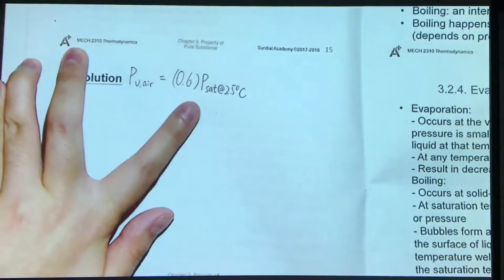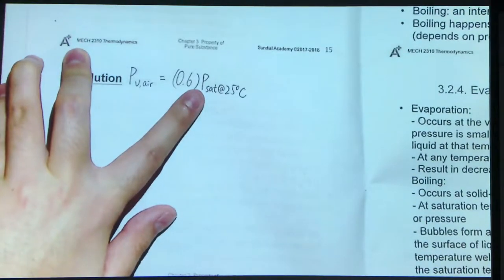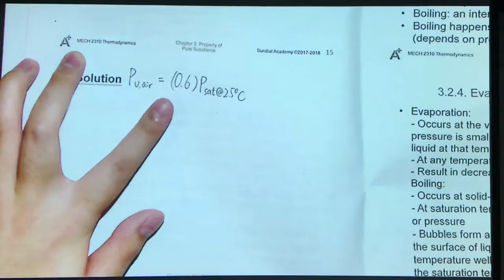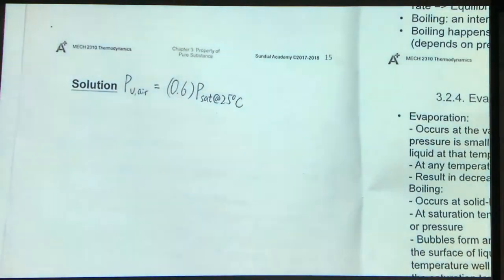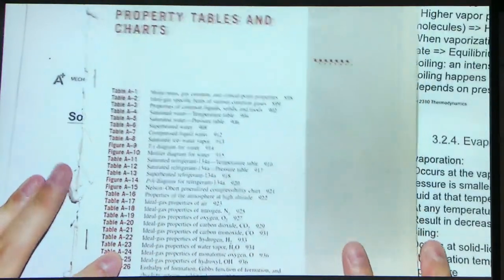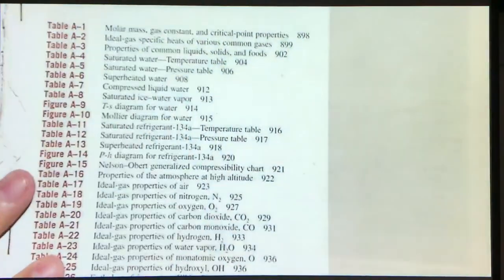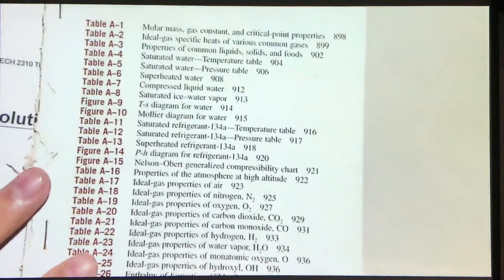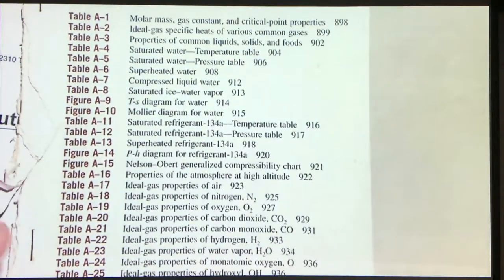What's this value? In order to find out this value, we need to check the property table. Let me introduce a little bit about the property table in our appendix. We have a property table with a very long list of tables, but in this course we are just interested in the first half of the tables — that means A1 to A17.